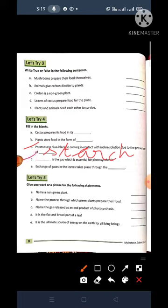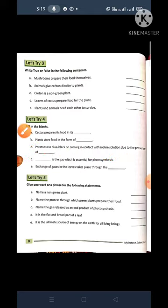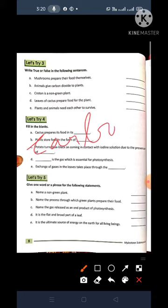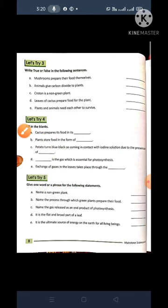Now come to the D. Dash is the gas which is essential for photosynthesis. So what you will write in the D? Carbon dioxide. Carbon dioxide is C-A-R-B-O-N Carbon D-I-O-X-I-D-E Carbon dioxide.